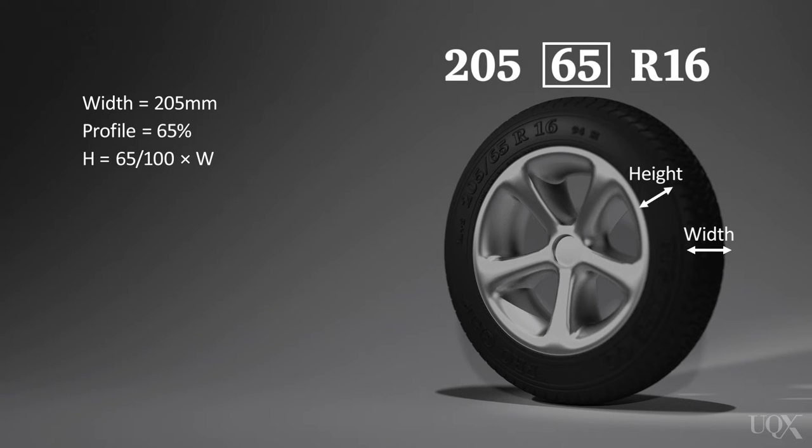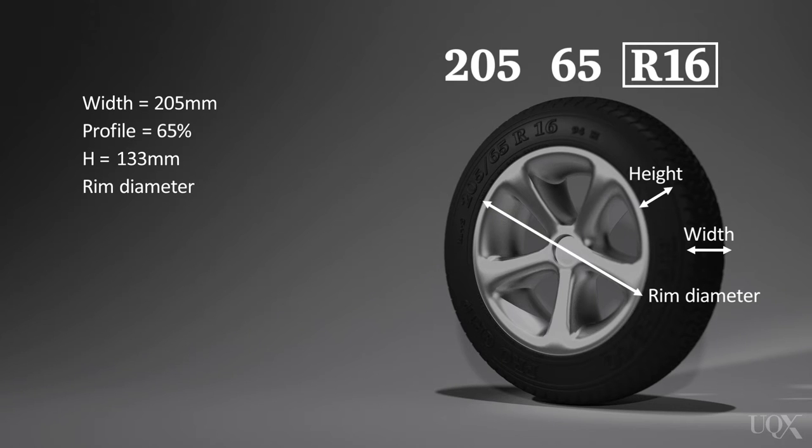For this tyre, 65 divided by 100 times 205 equals 133 millimetres. The third number is the diameter of the wheel rim measured in inches, which is 16.